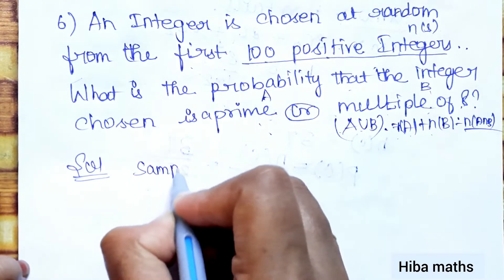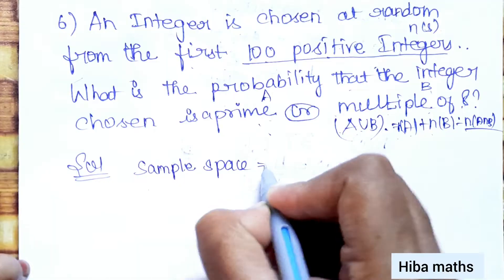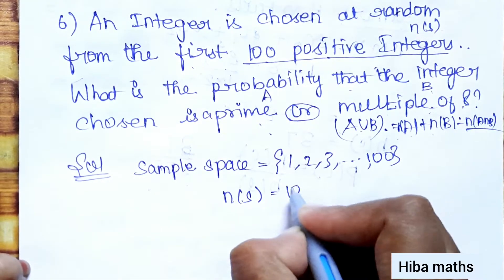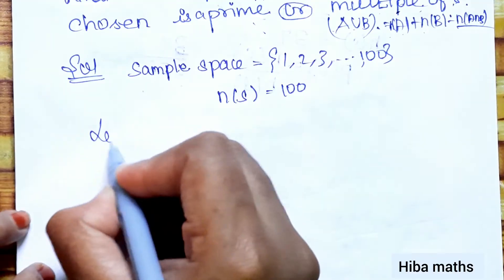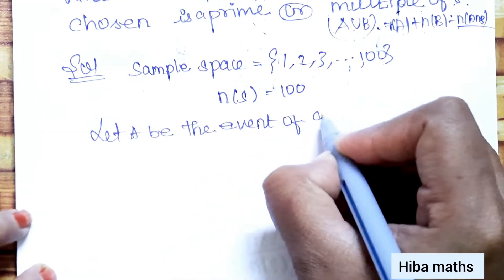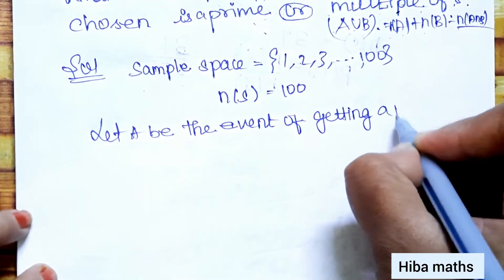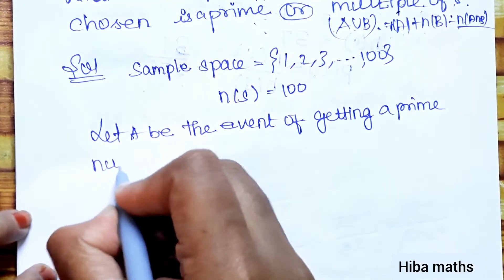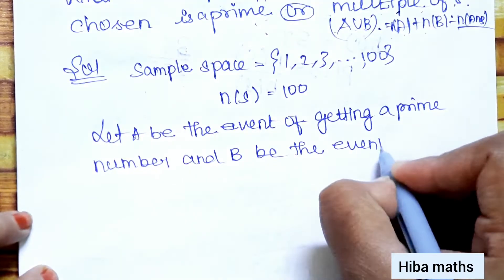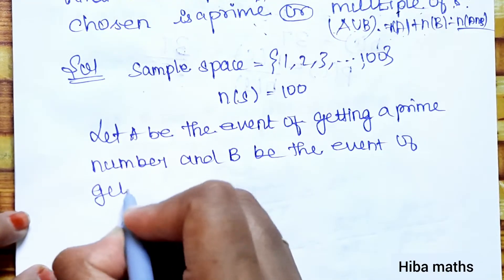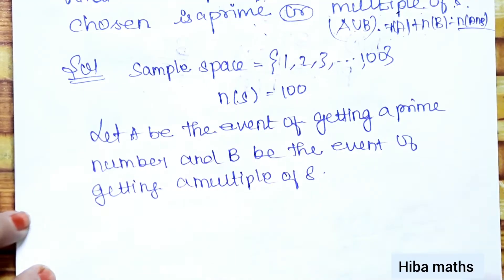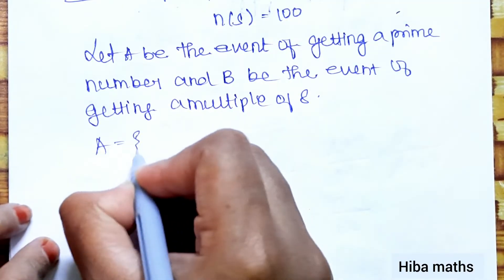The sample space is {1, 2, 3, ... up to 100}, so n(S) = 100. Let A be the event of getting a prime number and B be the event of getting a multiple of 8. n(A), the count of prime numbers up to 100, is 25.